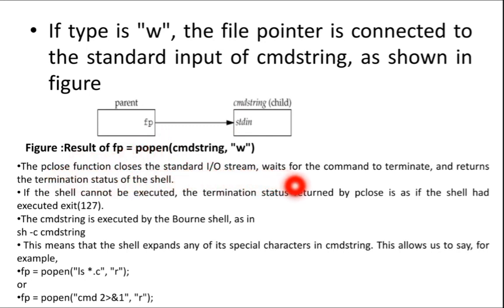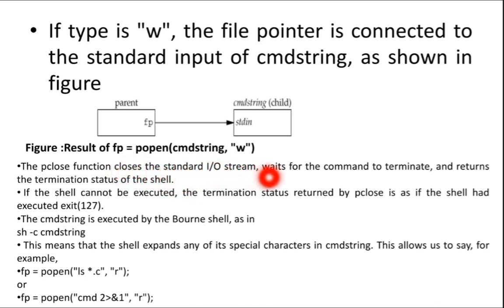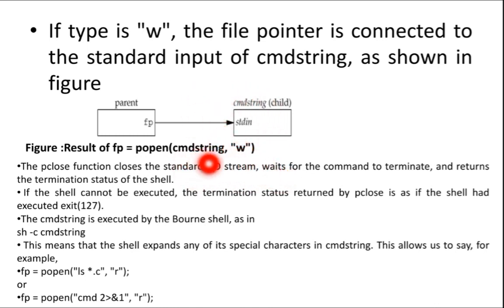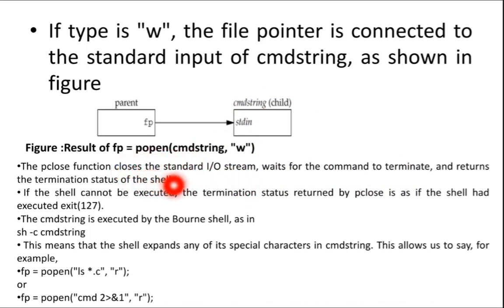The pclose function closes the standard I/O stream — both input and output streams. After reading and writing is over, it closes the stream, then waits for the command to terminate. Once the command terminates, it returns the termination status to the shell.